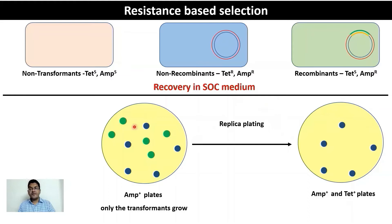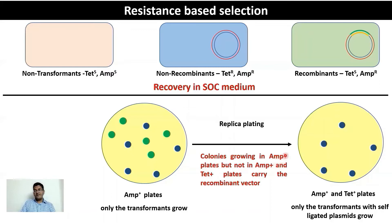By comparing the two plates, colonies present in the ampicillin-only plate but absent from the ampicillin-plus-tetracycline plate are the true recombinants. This two-step selection process allows you to finally identify the recombinant cells — colonies that grow in ampicillin-positive plates but not in ampicillin-and-tetracycline-positive plates carry the actual recombinant vector.